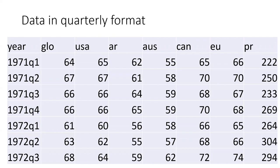This is an example of a quarterly dataset. You can see the data are given by quarter: 1971 first quarter, second quarter, third quarter, fourth quarter, and then the first quarter of 1972, in this format.